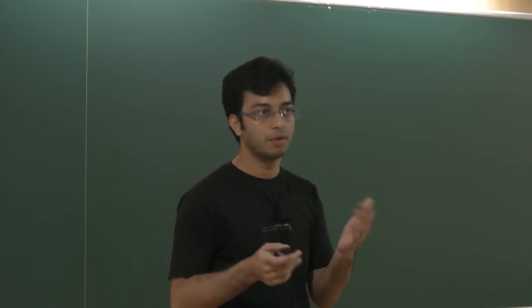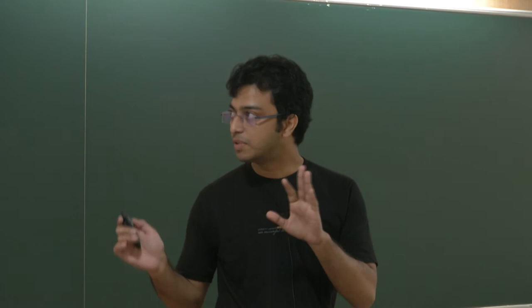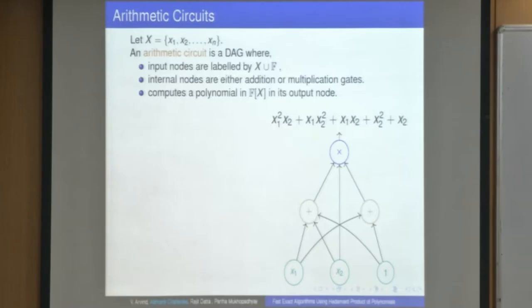Let me start with the basics. What is an arithmetic circuit? It is a DAG where the input nodes are labeled by some symbols x₁ to xₙ and some field elements. The internal nodes are either addition gates or multiplication gates. Every node computes some polynomial, and we say that the arithmetic circuit computes the polynomial at the root. For example, it is computing this expression, and as a polynomial, this is the polynomial computed by this arithmetic circuit.